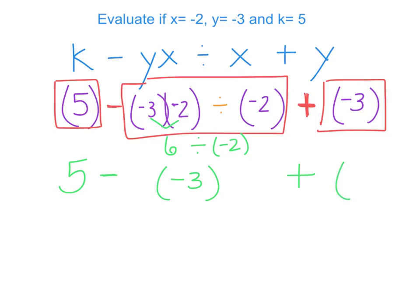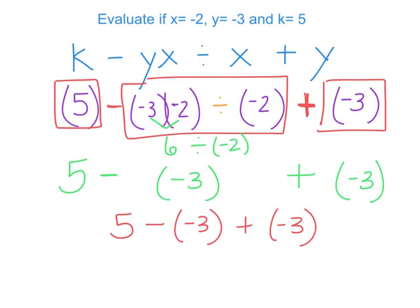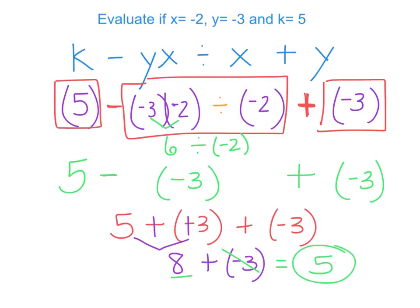Rewriting neatly: 5 minus negative 3, plus negative 3. Add the opposite of the subtraction: 5 plus 3 is 8, plus negative 3. Since three positives cancel three negatives, I'm left with 5 as the answer.